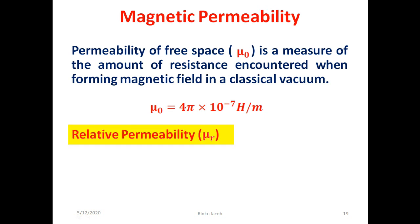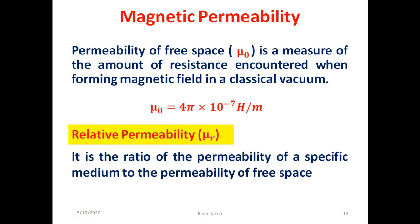Now we discuss about relative permeability, denoted by mu r. It is defined as the ratio of the permeability of a specific medium to the permeability of free space or vacuum. Mathematically, mu r equals mu divided by mu zero, where mu is the magnetic permeability of the specific medium and mu zero is the magnetic permeability of free space or vacuum.